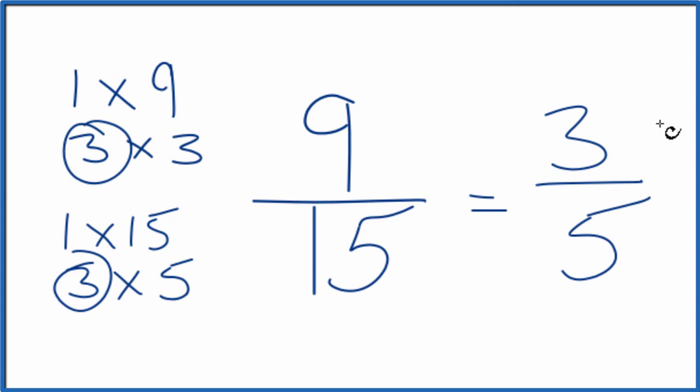We can't simplify this any further, it's in lowest terms. These are equivalent fractions, 9 divided by 15 and 3 divided by 5, you get the same number. It's just that we've simplified or reduced 9 fifteenths down to three-fifths.